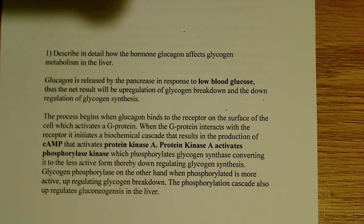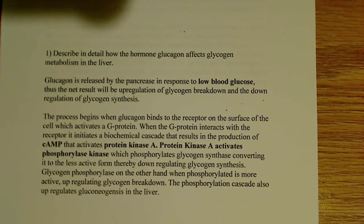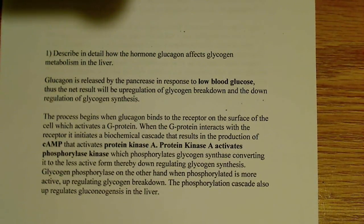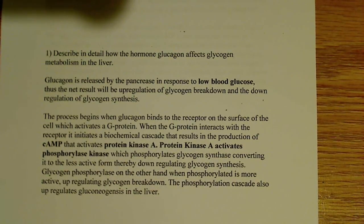The process begins when glucagon binds to the receptor on the surface of the cell, and this activates a G protein. There's more detail to this, but you probably don't need that level of detail for an introductory class, so I'll use layman's terms here. When the G protein interacts with the receptor, it initiates a biochemical cascade that results in the production of cyclic AMP.